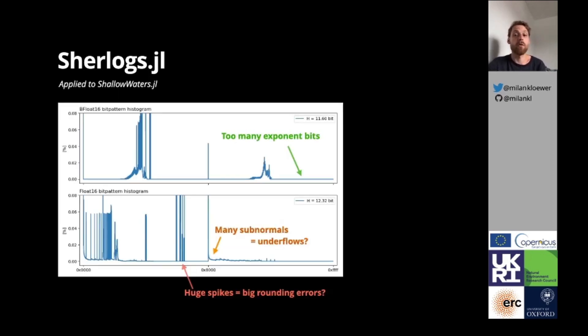We can apply the Sherlock number format also to the shallow water model from before. The result is quite different. With both Float16 and BFloat16, there are huge spikes and we have to cut the y-axis to visualize the rest.